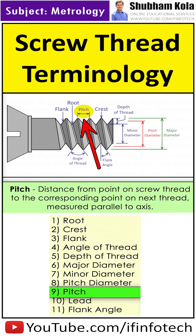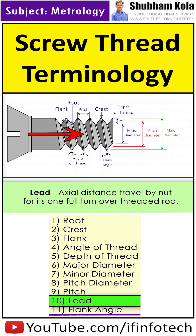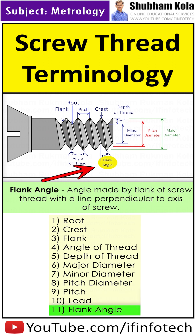Pitch is the distance from a point on a screw thread to the corresponding point on the next thread. Lead is the axial distance traveled by a nut for one full turn over a threaded rod. Flank angle is the angle made by the flank of the screw thread with the line perpendicular to the axis of the screw.